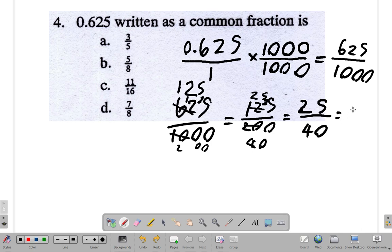But I can still cancel down further. 5 into 25 is 5. 5 into 40. You know, 5 eights is 40. So 5 into 40 is 8. So the answer is 5 over 8. So the answer for 4 is B.